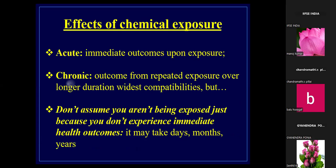There are two main effects of chemical exposure. One is acute — the immediate outcome upon exposure. For example, if someone takes cyanide, they die immediately; or if an irritant chemical is put on the skin, an allergic reaction develops right away. Chronic is a long-term repeated exposure over a longer duration. It may take days, months, or years to manifest.